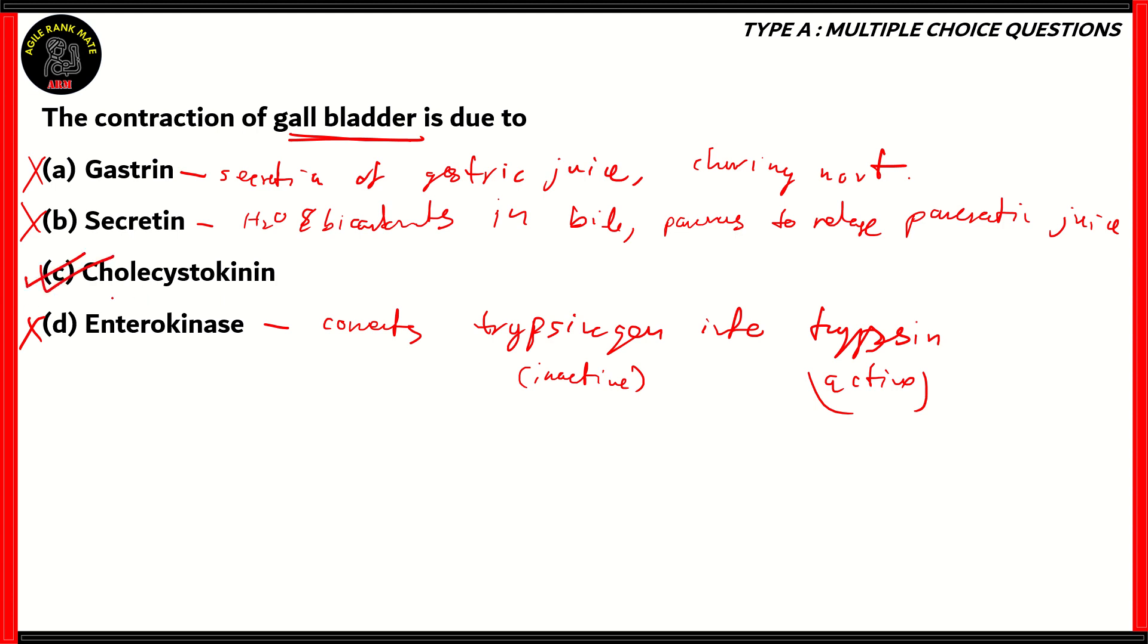It's option C, cholecystokinin, which stimulates the contraction of gallbladder. This is important because when the gallbladder contracts, the bile that is stored gets released into the duodenum. So option C, cholecystokinin, is the right answer.